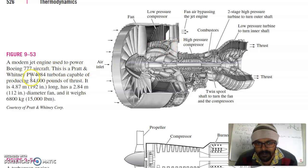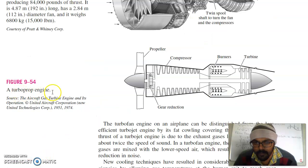This is a modern jet engine used to power Boeing 777 aircraft. This is a Pratt Whitney turbofan capable of producing 80,000 pounds. You can see here, this is the fan here, which is used to run the extra mass flow rate of air. This is low compressor. Then, you have high stage pressure compressor. Then, this is the combustors. These are the combustion chambers. And then, this is a two stage high pressure turbine. This is low pressure turbine to turn inner shaft. Thrust will come from here.